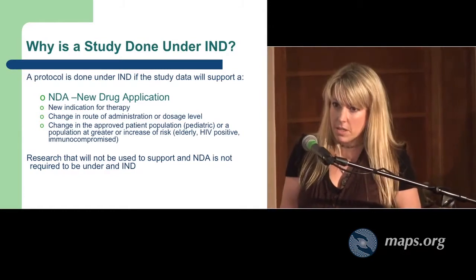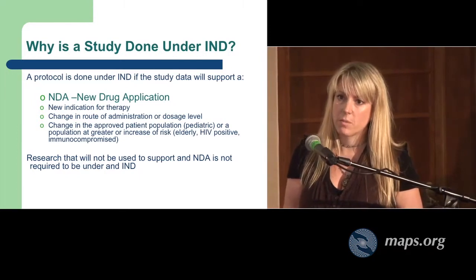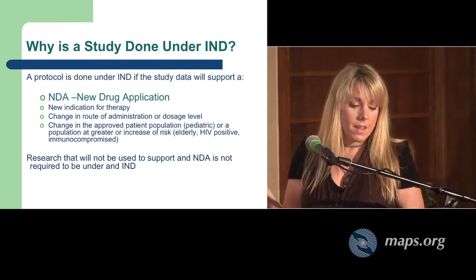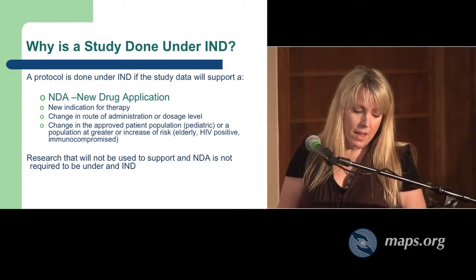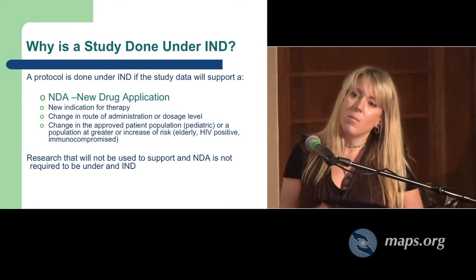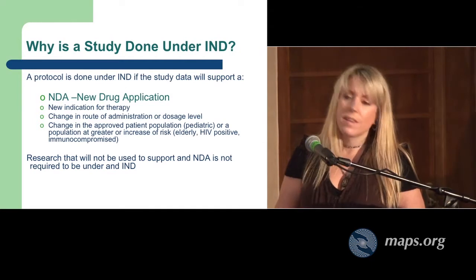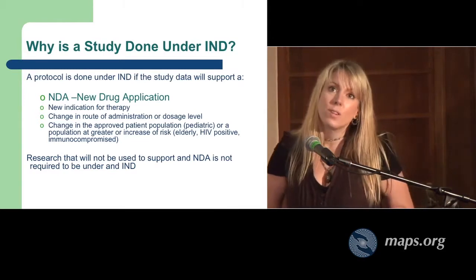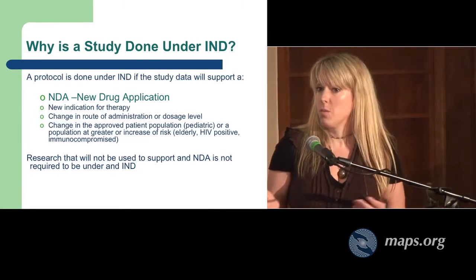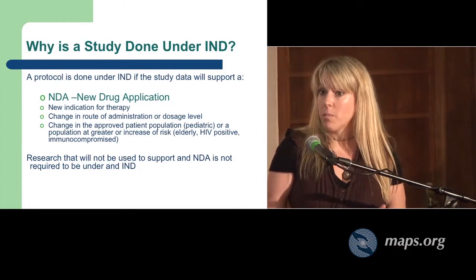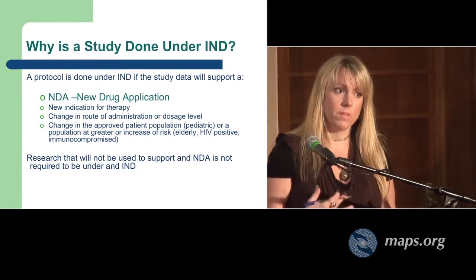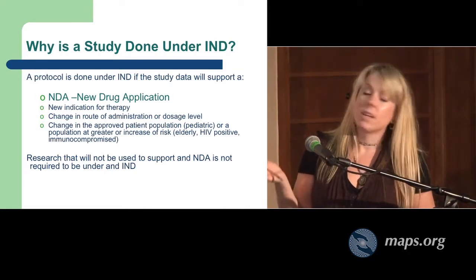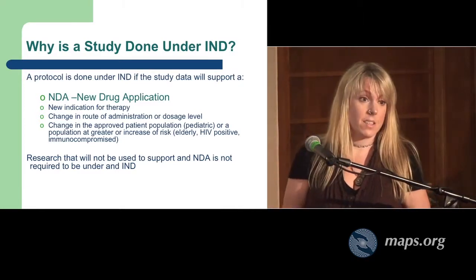There's been all kinds of discussions about all kinds of research projects — some of them are preclinical research, some of them are clinical research with subjects, and there are many different directions that this research takes. One thing in common with all of the research we're talking about is that we want to get these drugs approved to help people that are suffering. In order to do this, we have to do our human trials within a certain framework so that the data can be used to support the approval of these drugs. The first step in doing a human clinical study, if you're going to work in the US, is to do an IND — an investigational new drug application.